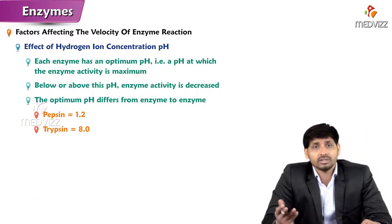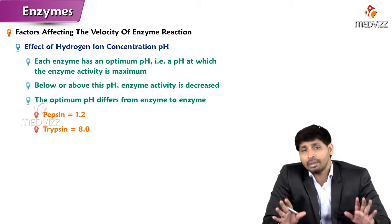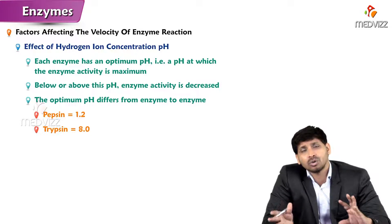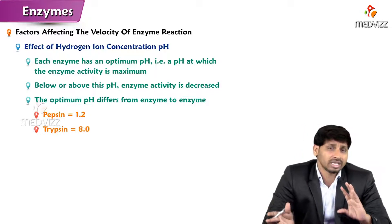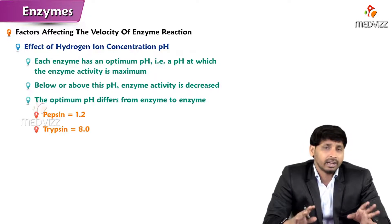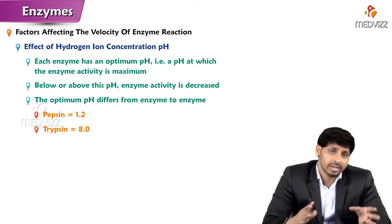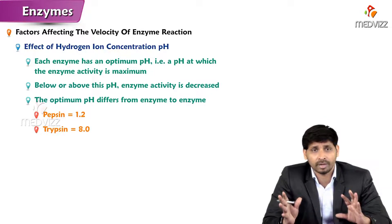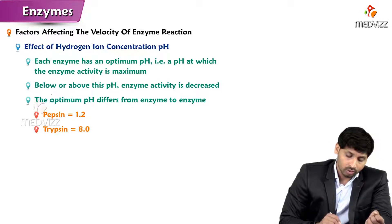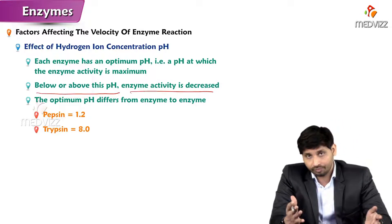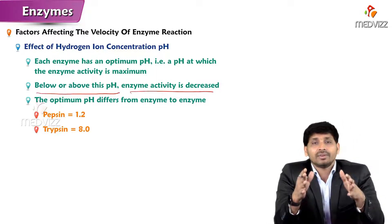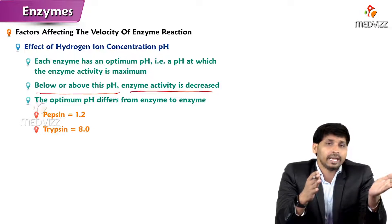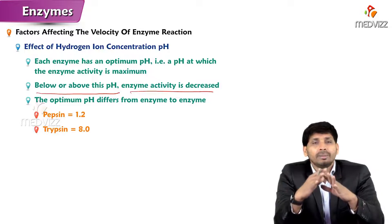Next is the effect of hydrogen ion concentration, that means pH. Each enzyme has its optimum pH because enzymes are protein in nature and made up of amino acids. These amino acids — acidic and basic — are amphoteric, meaning they act as anionic as well as cationic based on the type of pH environment. Below or above this optimum pH, enzyme activity is decreased. Enzymes must have an optimum pH for maximum velocity of reaction.